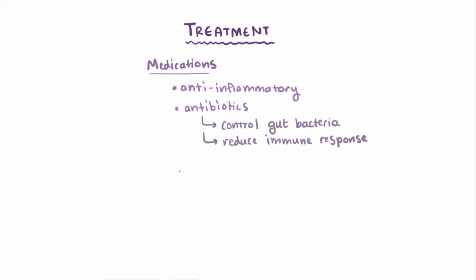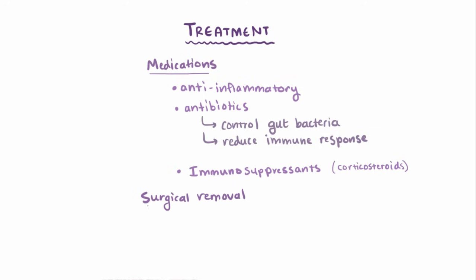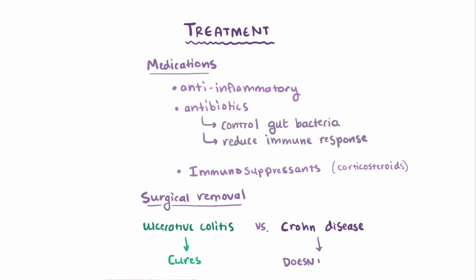If patients have severe symptoms, they may be given immunosuppressants like corticosteroids. Beyond that, surgery and removal of the affected tissue is possible, but one really important distinction from ulcerative colitis is that removal doesn't cure the disease, since the inflammation can occur anywhere along the GI tract.